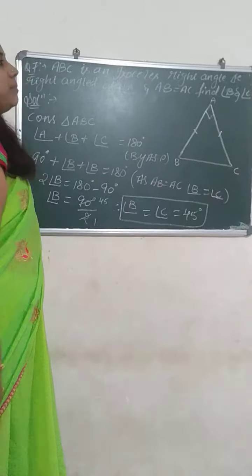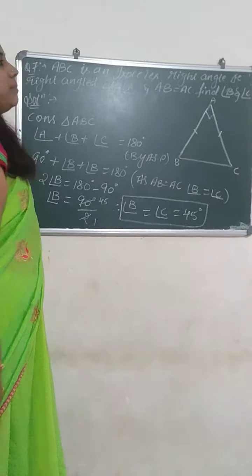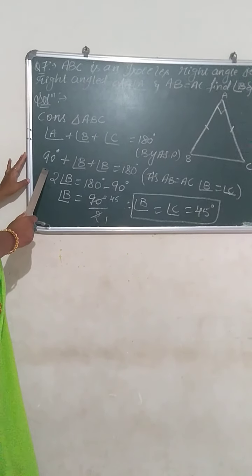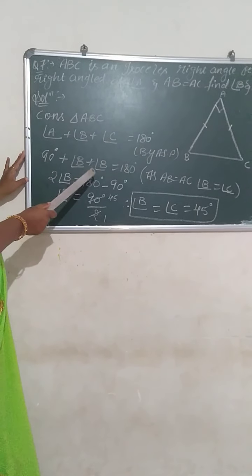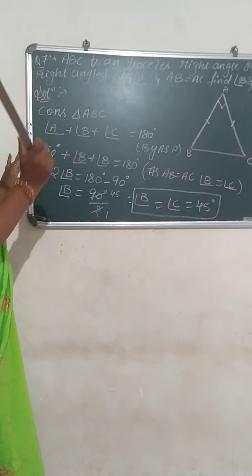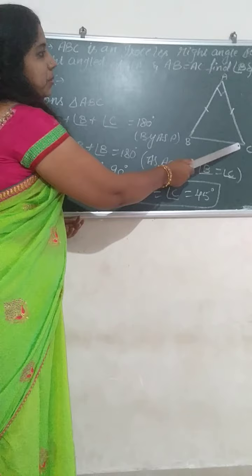Here directly I will jump to the ASP property, that is angle sum property: angle A plus angle B plus angle C equals 180 degrees. Angle A is given as 90 degrees already.